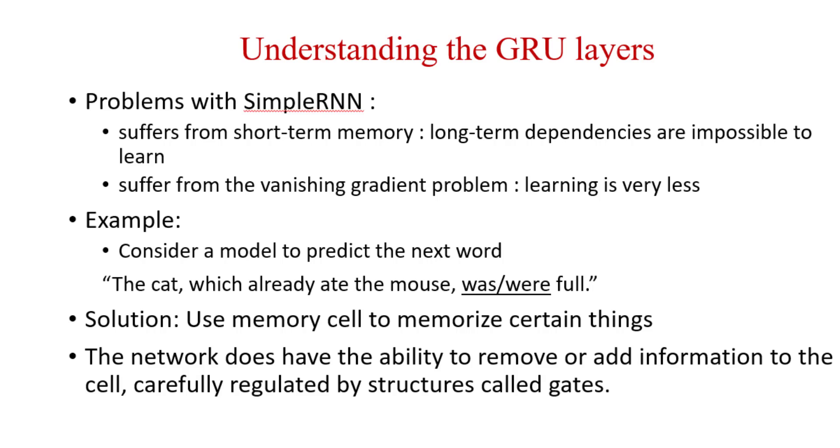So this was or were is actually depending on the initial part of the sentence, that is the cat. Since we have used the cat, we have to use was over there. But we need to have something that will memorize that we have used cat at the initial part of the sentence which will provide reference or context while filling was or were at the blank position. So the solution is we have to use memory cell to memorize certain things which are really important in order to perform the specific tasks.